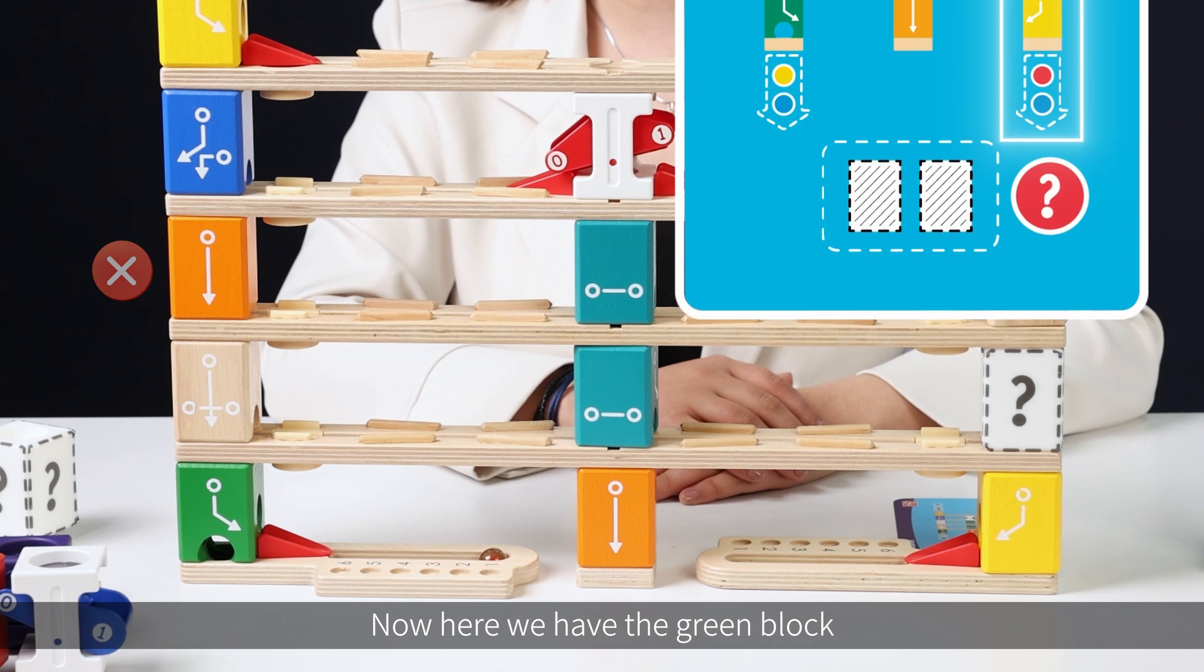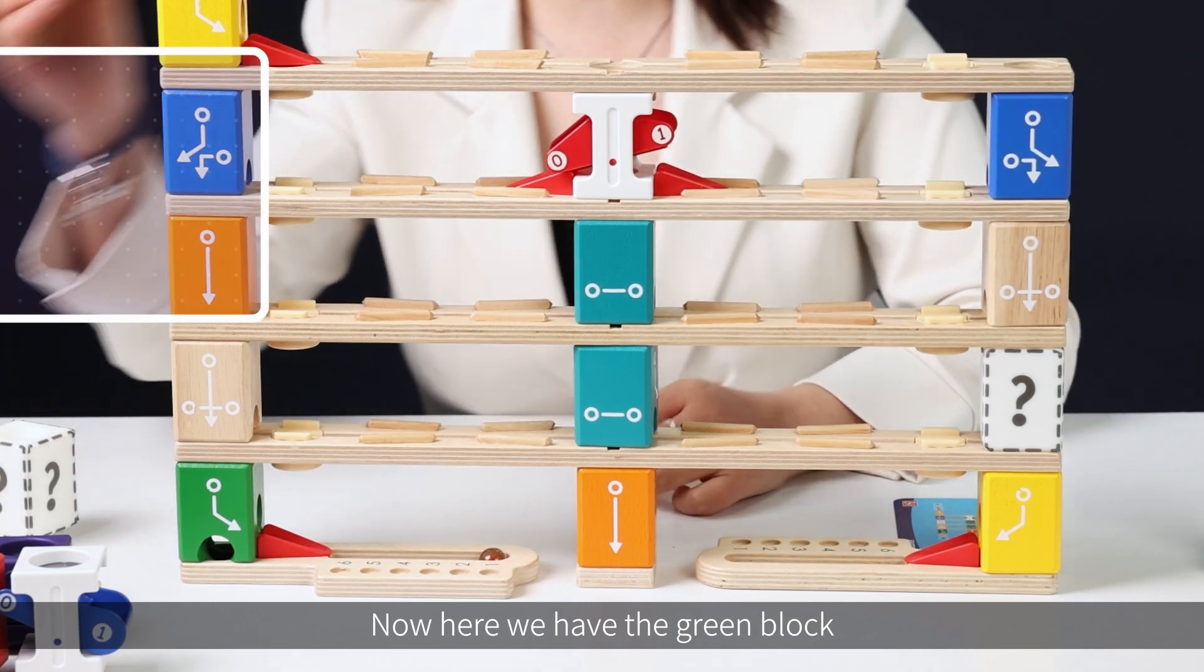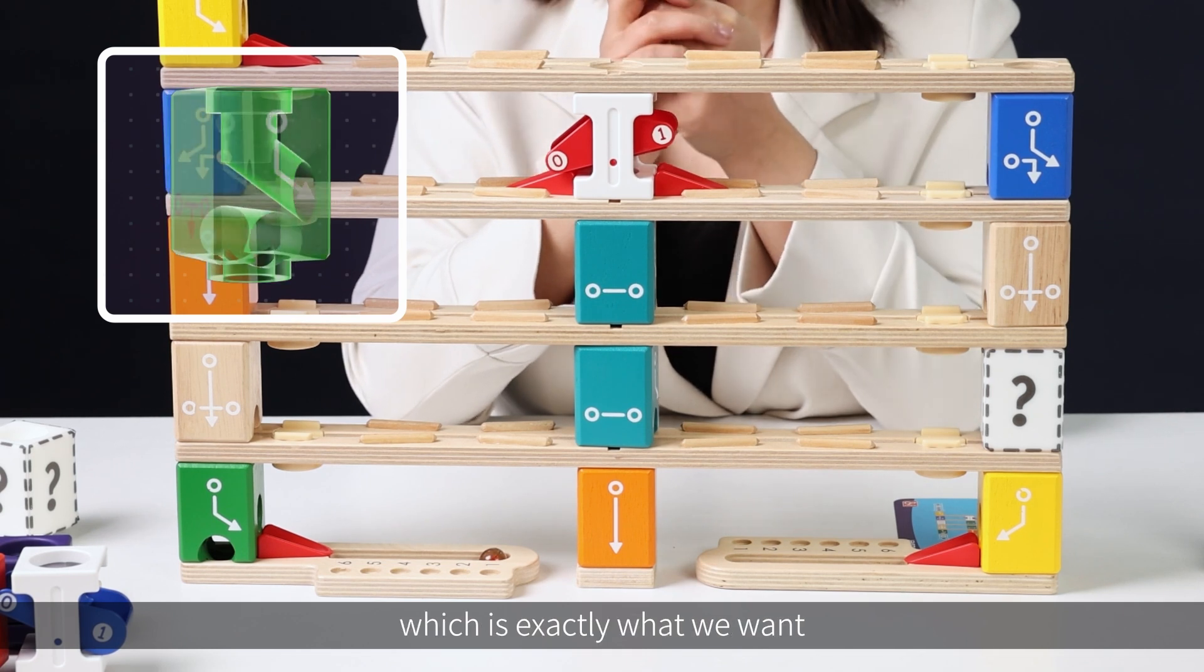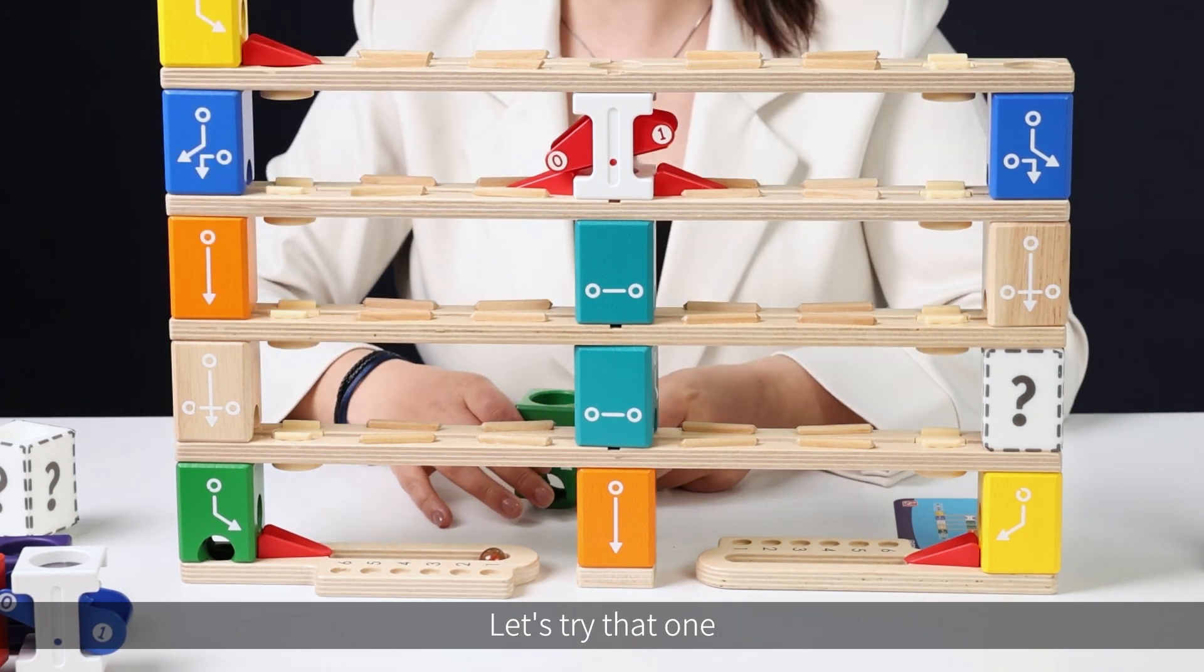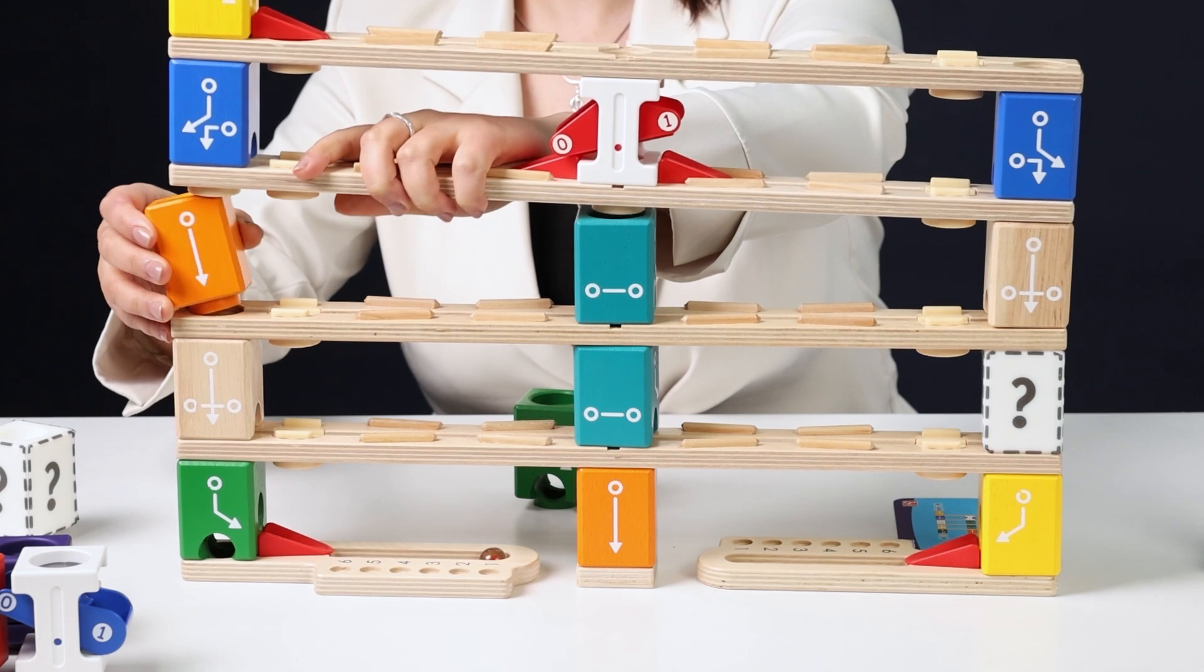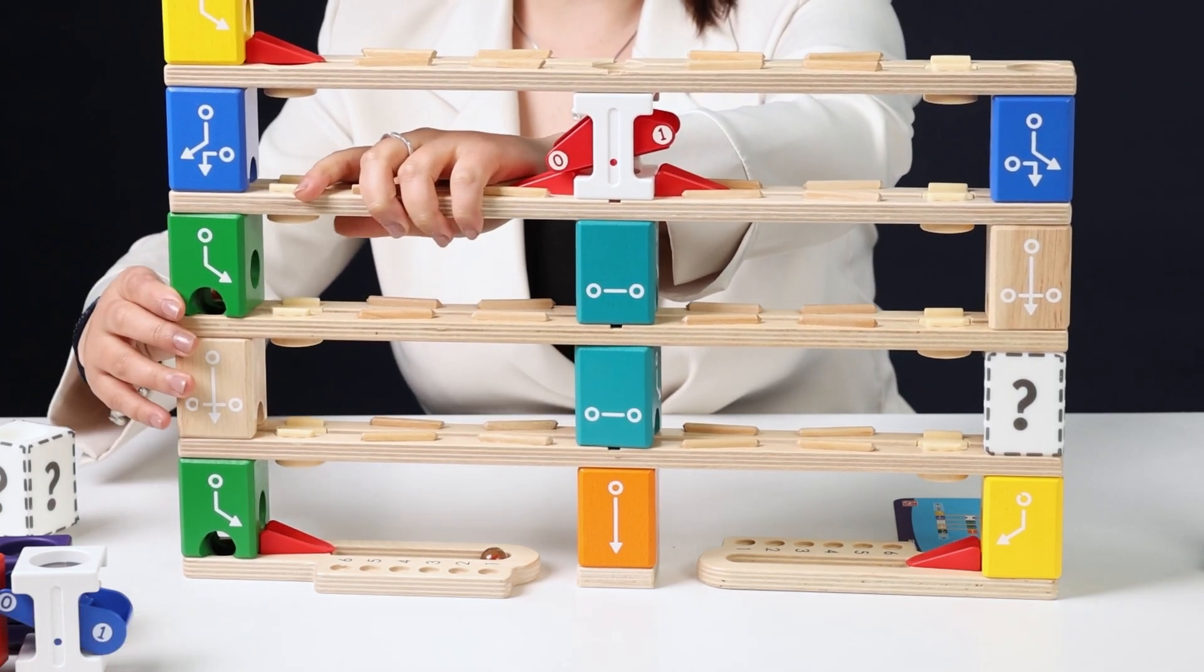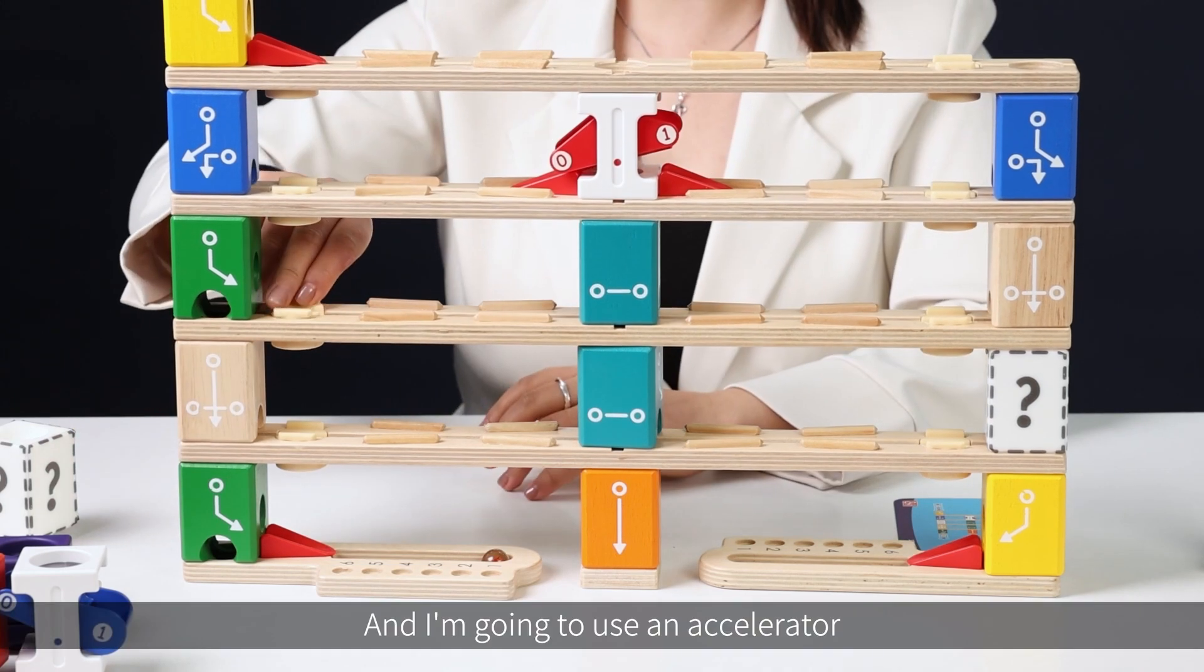Now, here we have the green block and it has a right exit, which is exactly what we want. Let's try it. Let's try that one. And I'm going to use an accelerator.